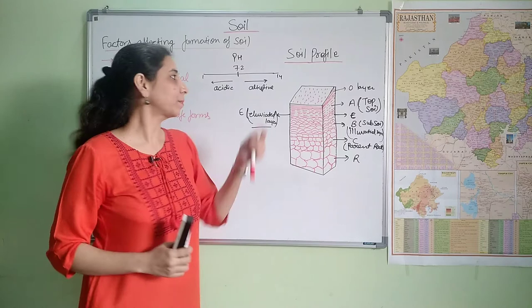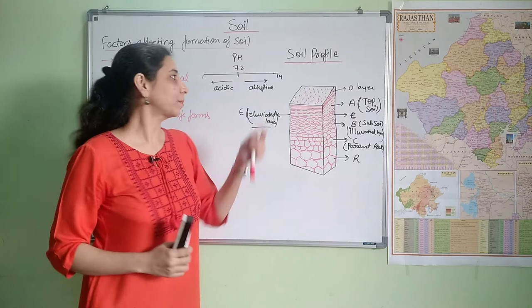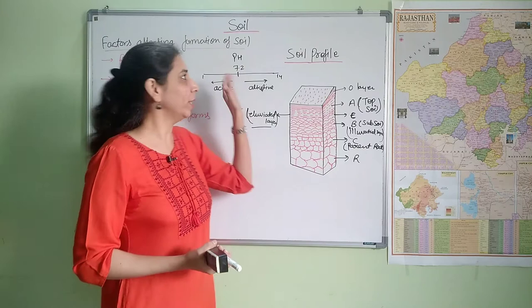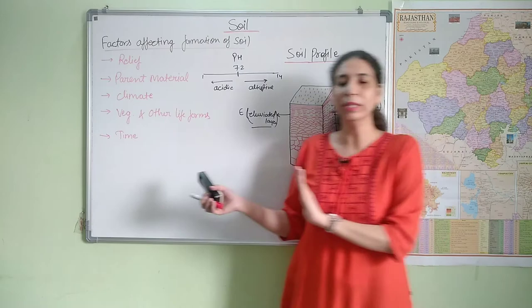Alkalinity is a big problem in Rajasthan. The bases accumulate in the top layer. So for alkaline soil, the bases come up and settle there. In terms of pH: if pH is less than 7, the soil is acidic; if pH is more than 7, the soil is alkaline. That is clear regarding acidity and alkalinity.